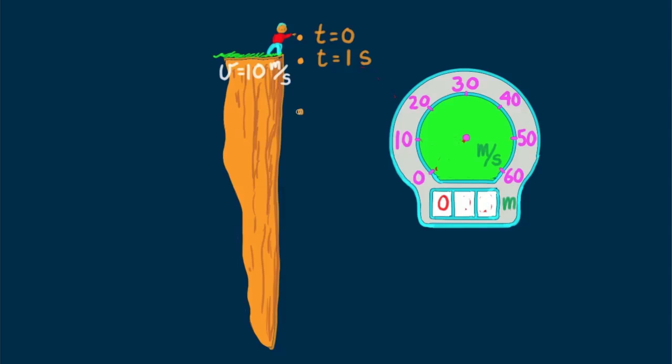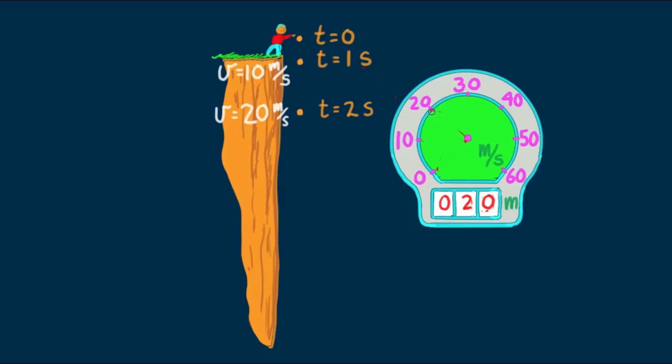One second later, the boulder again gains 10 meters per second, and the speedometer reading is 20 meters per second. And our odometer reading is 20 meters.